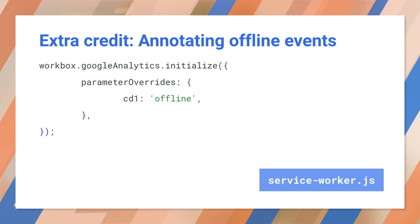To solve this issue, we need to modify or annotate the data that gets sent in the retried request. One option is to specify the parameter overrides configuration option. This option lets you modify the measurement protocol parameters that get sent in the retried request. So even though Google Analytics does not have a built-in dimension for online versus offline interactions, we can create our own dimension for exactly this purpose using a feature called custom dimensions. Once we've created a custom dimension for something like network connectivity, we can use the parameter overrides to flag replayed requests as offline.